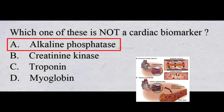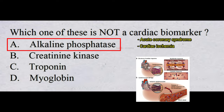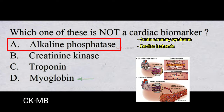Cardiac biomarkers are substances that are released into the blood when the heart is damaged or stressed. Measurements of these biomarkers are used to help diagnose acute coronary syndrome and cardiac ischemia — conditions associated with insufficient blood flow to the heart. Cardiac biomarkers which can be used to diagnose a heart attack are cardiac troponin, creatinine kinase, CKMB, and myoglobin.